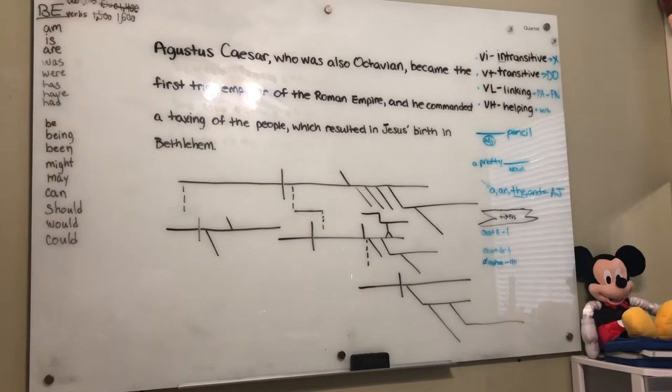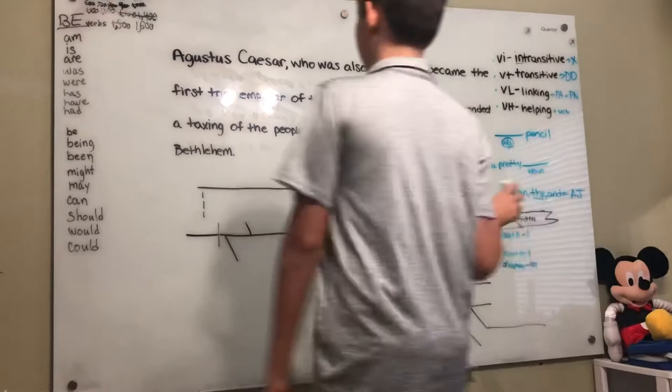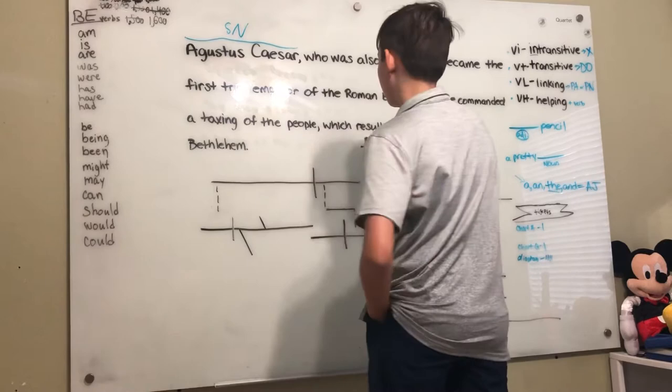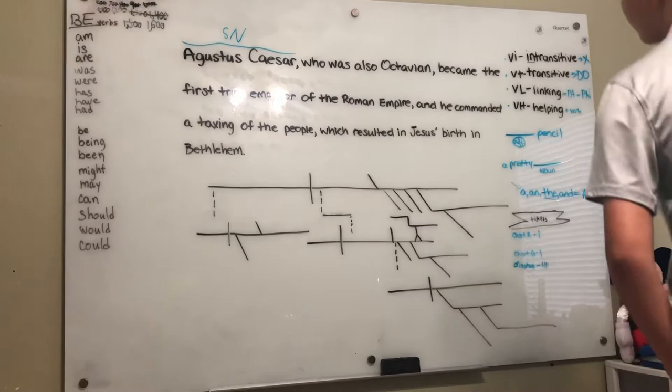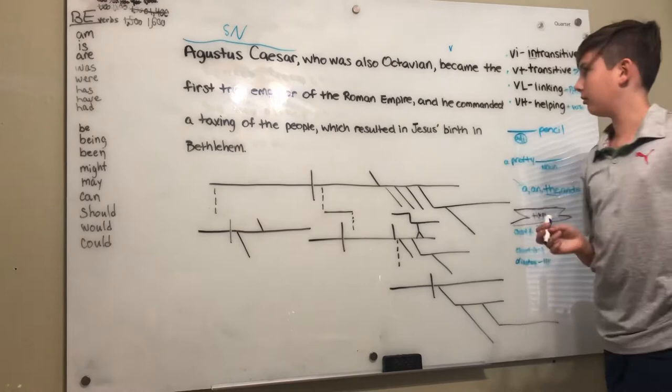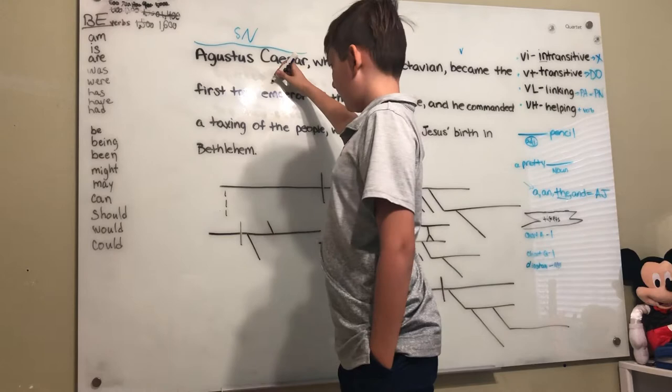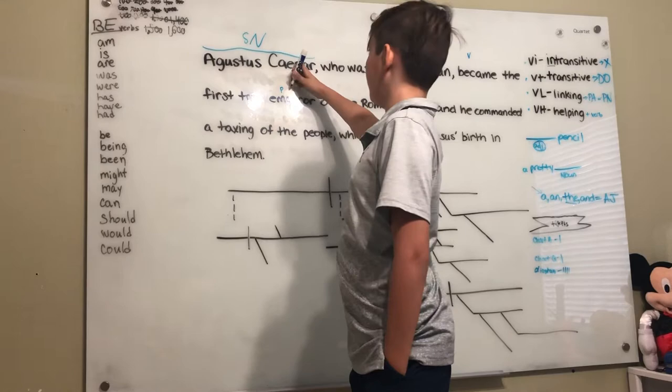There is a sentence about Augustus Caesar. Alright, do it fast, because I'm videoing. Augustus Caesar was being said about the subject. Augustus Caesar became. Augustus Caesar became for what? Emperor. Does emperor, ask your next question. Does emperor describe or rename Augustus Caesar? And which one? Rename. So, predicate nominative.